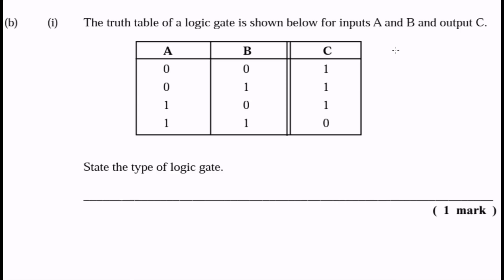Based on my knowledge of logic gates, I know that this particular gate is a NAND gate, because it's the opposite of an AND gate. In this particular gate, the output is low only when both of your inputs are high. So this is the general symbol for a NAND gate. You have your inputs A and B and your output C. It's a pretty straightforward question worth only one mark.